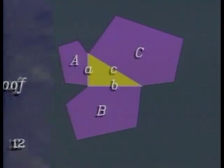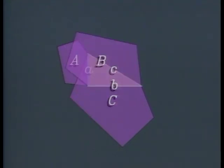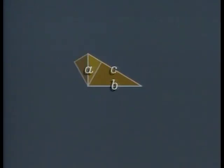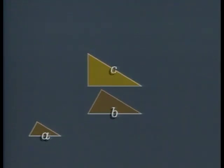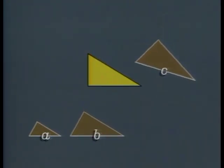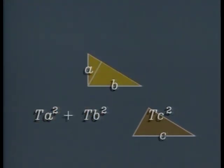And now we can discover something remarkable that both Pythagoras and Euclid overlooked. First, notice that it doesn't matter whether the three shapes are on the outside or not. So if we just use these three similar triangles, we can find yet another proof of the Pythagorean theorem — perhaps the simplest proof of all. Because the areas of the two smaller triangles obviously add up to the area of the larger one, the Pythagorean theorem is proved yet again.